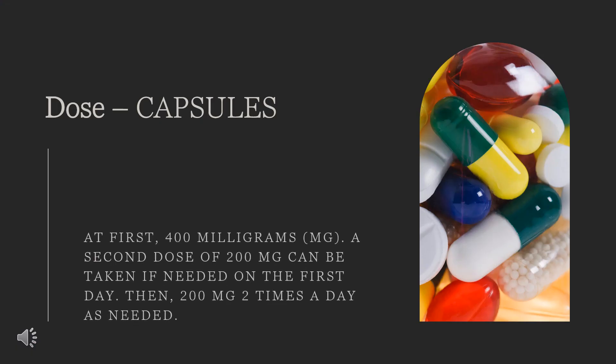The dose of this medicine will be different for different patients. For oral dosage form capsules, for acute pain or pain during menstruation: Adults, at first 400mg, then a second dose of 200mg can be taken if needed on the first day, then 200mg twice a day as needed. Children: use and dose must be determined by your doctor.